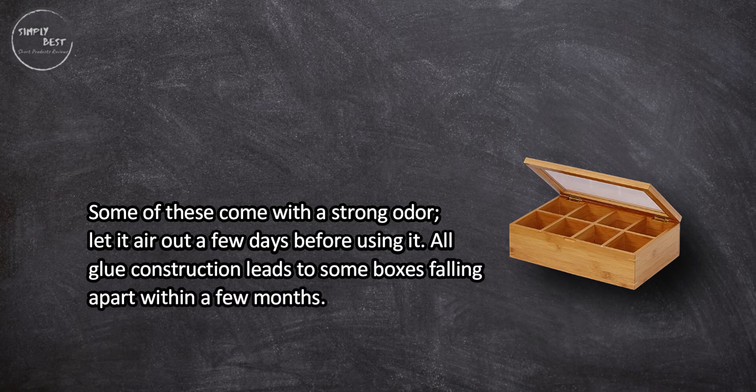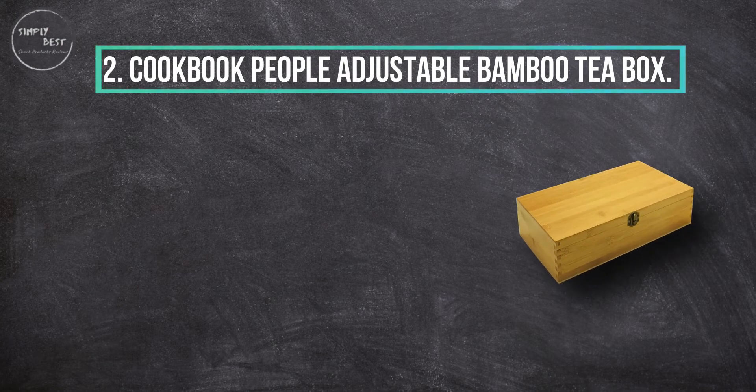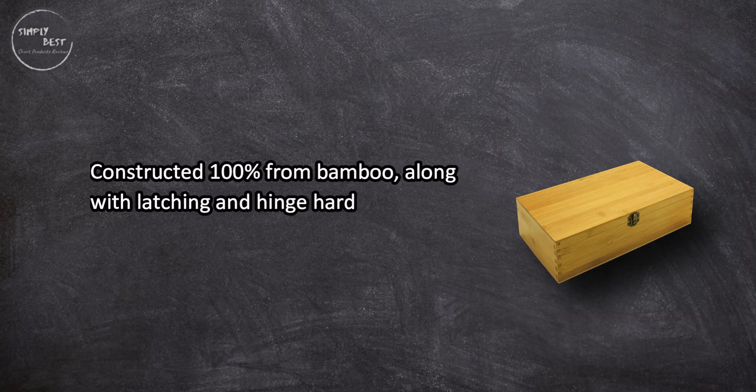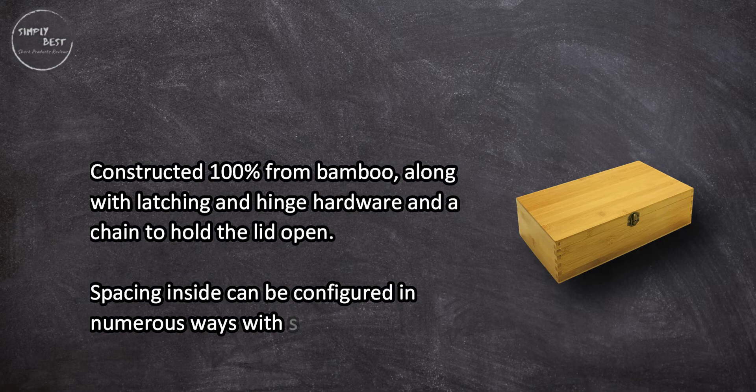At number two, Cookbook People Adjustable Bamboo Tea Box, constructed 100% from bamboo along with latching and hinge hardware and a chain to hold the lid open. Spacing inside can be configured in numerous ways with sliding dividers.